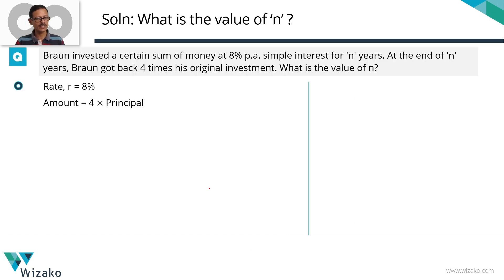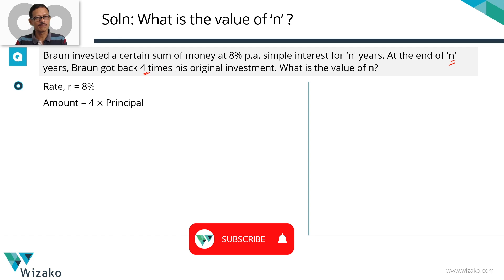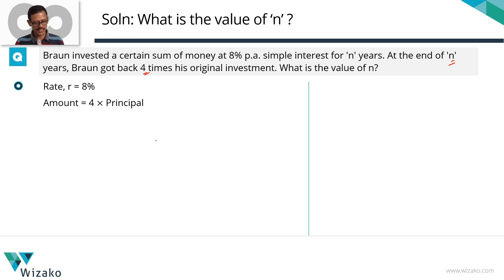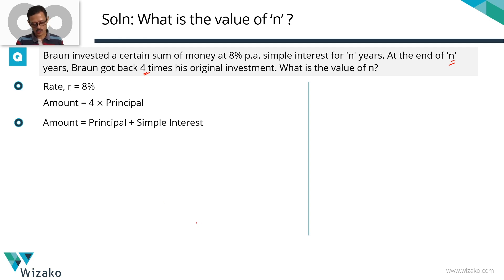Let's get started. Key data given to us: rate r is equal to eight percent per annum simple interest. The amount he got back at the end of n years is equal to four times his original investment. So if the principle is what he put in, at the end of this period he gets four times the principle — that's called the amount. Amount equals principle plus simple interest. One quick way of solving these questions is assuming a value for the principle. Let's go with $100 for principle.